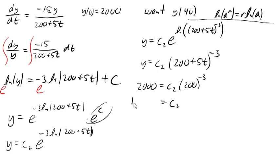And then we were wanting y(40). So y(40) then will be, going back to our original equation, 1.6 times 10 to the 10th, times (200 plus 5 times 40) to the negative 3rd. And that gives us 250 grams of dye in the tank when it overflows.